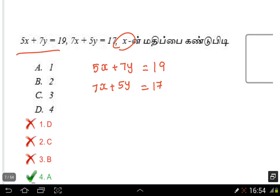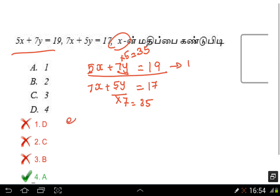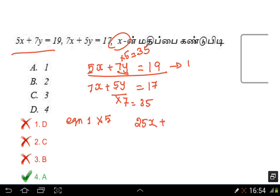If you look at this equation, you can use a number to multiply. If you look at the value of x and y, we need to cancel the y terms. If you look at 5y and 7y, we multiply the equations to make the coefficients equal. So for the first equation, we multiply by 5y.